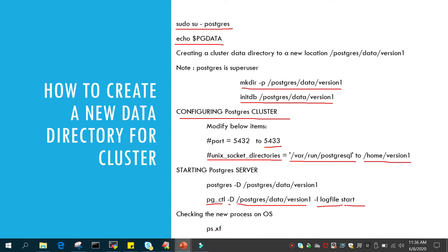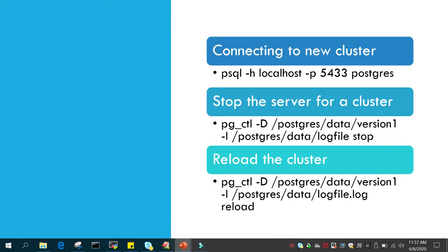You can check whether your new instance has come up with the new processes or not using ps xf, which will show you the tree structure with postmaster at the base and other processes following it. Once your new instance is instantiated, you can connect to it using psql -h localhost with the new port and the superuser which is postgres.